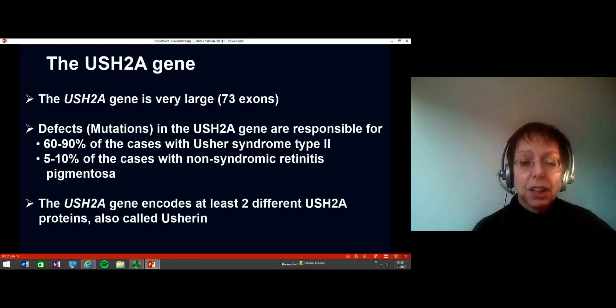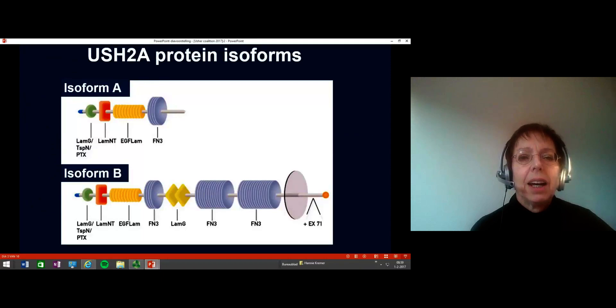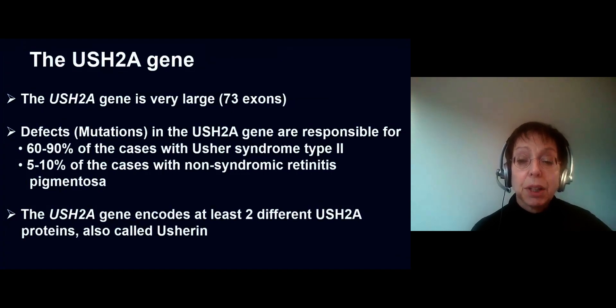The USH2A gene encodes at least two different USH2A proteins, also called Usherin. There are two different isoforms. Isoform A is the smallest and occurs outside of cells. It consists of protein domains depicted as colored discs or cubes. Isoform B is much longer, with a small part inside the cell, then through the membrane, and a large part outside with many more protein domains.